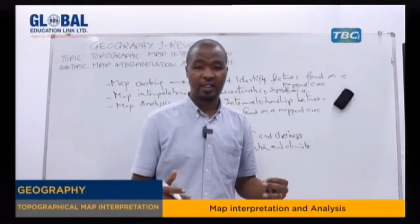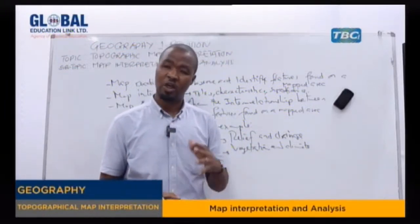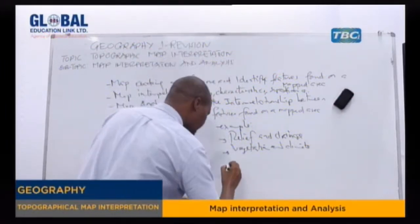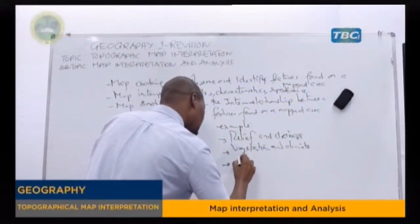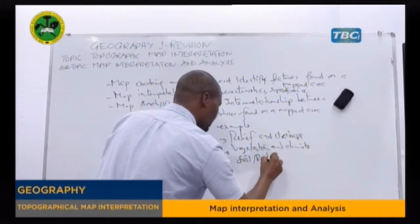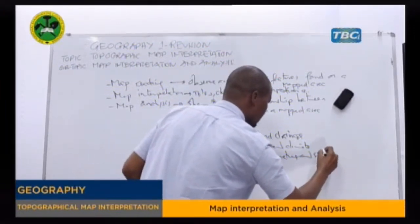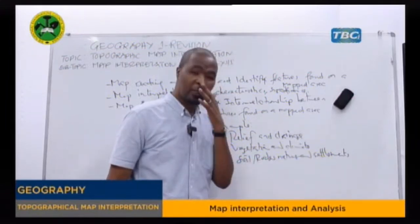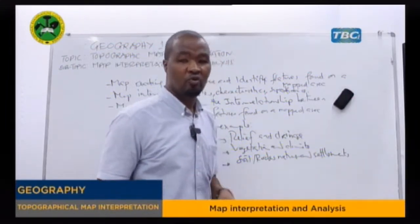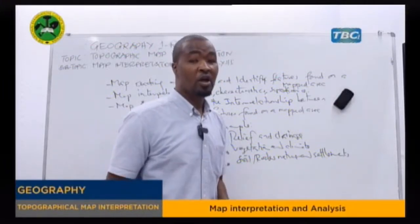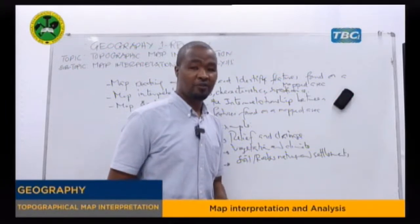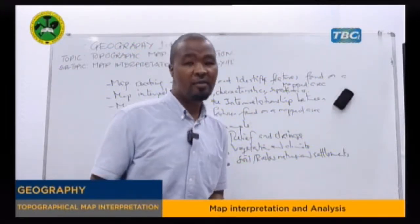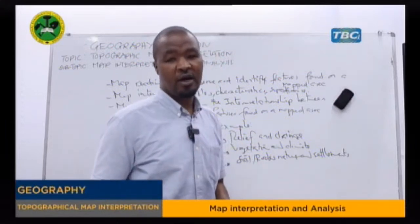For instance, why do we have a dense forest in equatorial areas? We have dense forest in equatorial areas because we have a high amount of rainfall — and that is the relationship between vegetation and the climate. Let's see the relationship between soil or rock nature and settlement. There is a relationship between rock nature, soil type, and settlement. Most people, especially farmers, like to settle where there is good soil for agricultural activities. You may find most of them accumulated in an area with fertile soil because they will do the activity in a sustainable way.